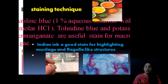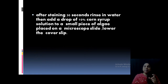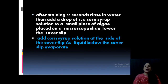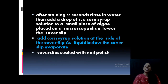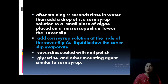You can stain the algae and observe under a microscope, and the color structure will appear. After staining for 30 seconds, the procedure is: add stain, wash it, rinse in water, then add a drop of corn syrup. Place the algal film in the corn syrup solution and put the cover slip. Corn syrup solution is added to the stained algae and the cover glass placed on top; the corn syrup on the side will evaporate. Cover slips are finally sealed with nail polish to prevent fungal infections. Glycerin and other mounting agents can also be used instead of corn syrup.